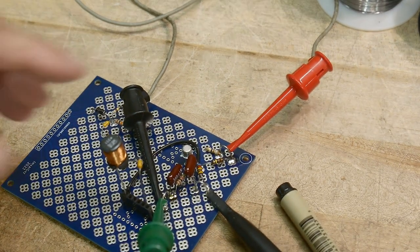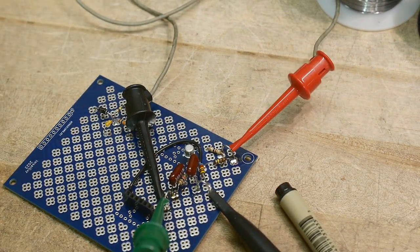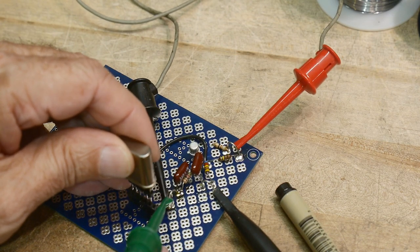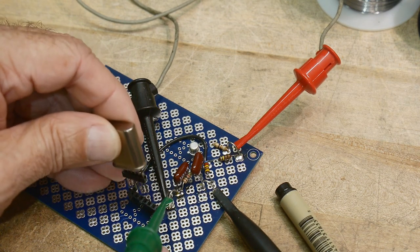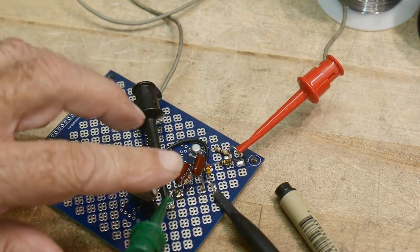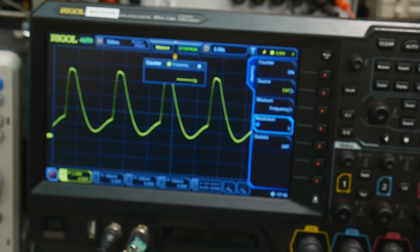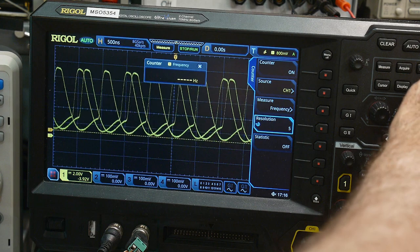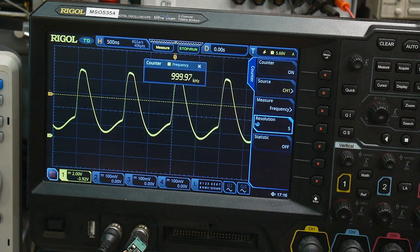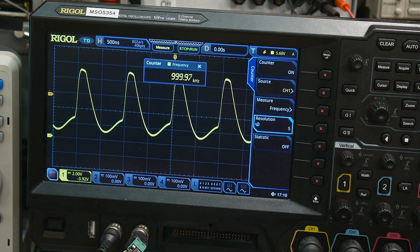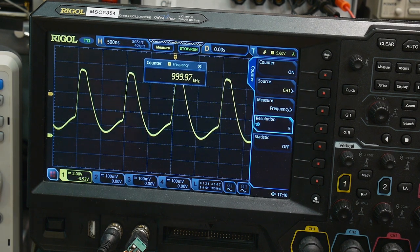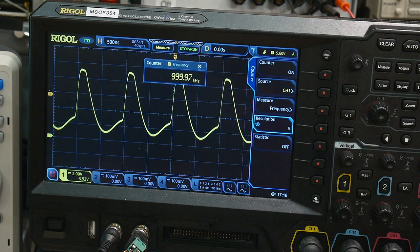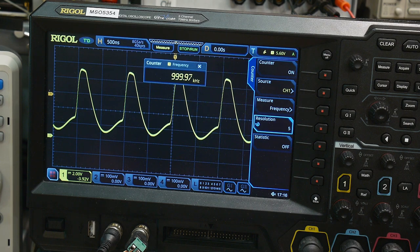Let me pull out the inductor and we'll put a crystal. This is the one megahertz crystal in its place, so it's going to act as the inductor. There we go, 999.97 kilohertz, and the waveform looks basically the same. So it doesn't really matter if we're using an inductor or a crystal. The functionality of the circuit is going to be about the same.